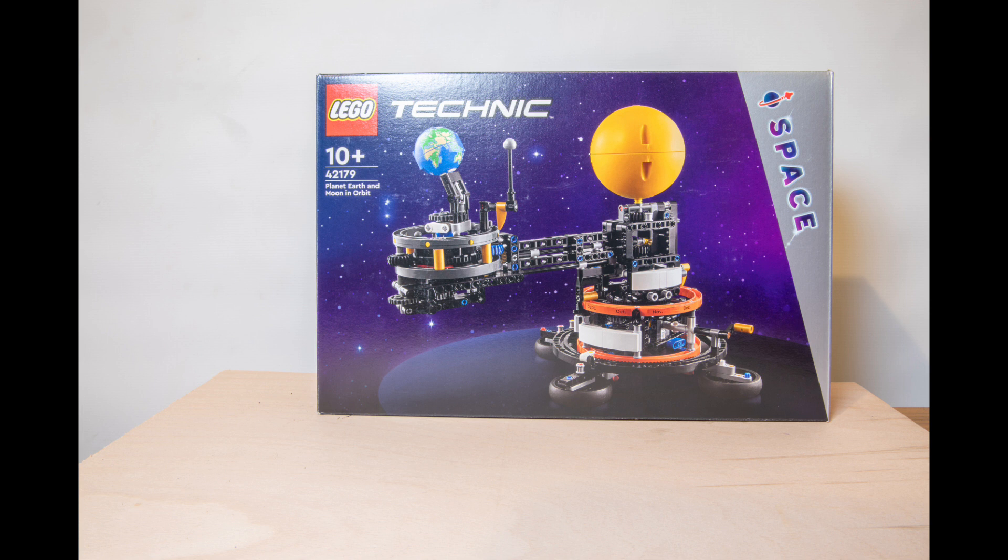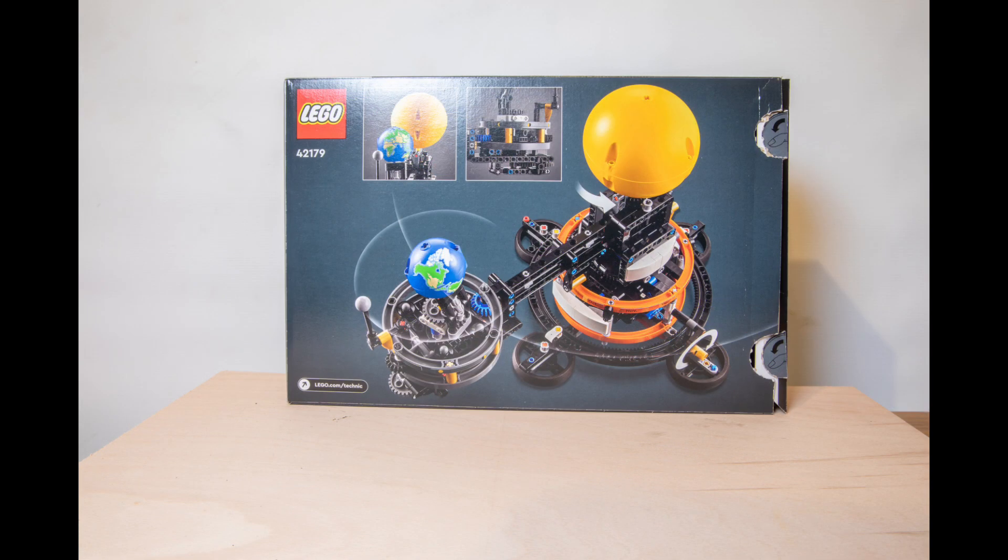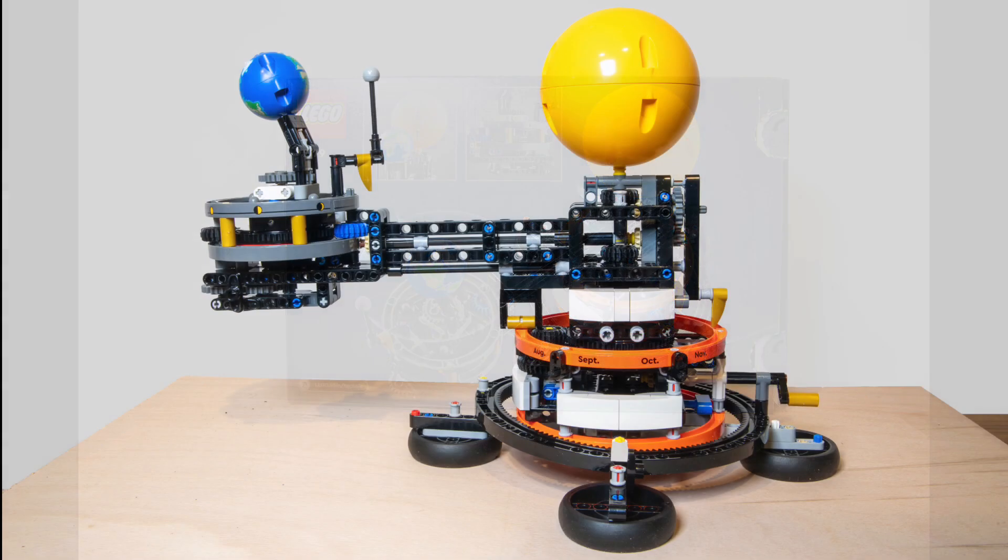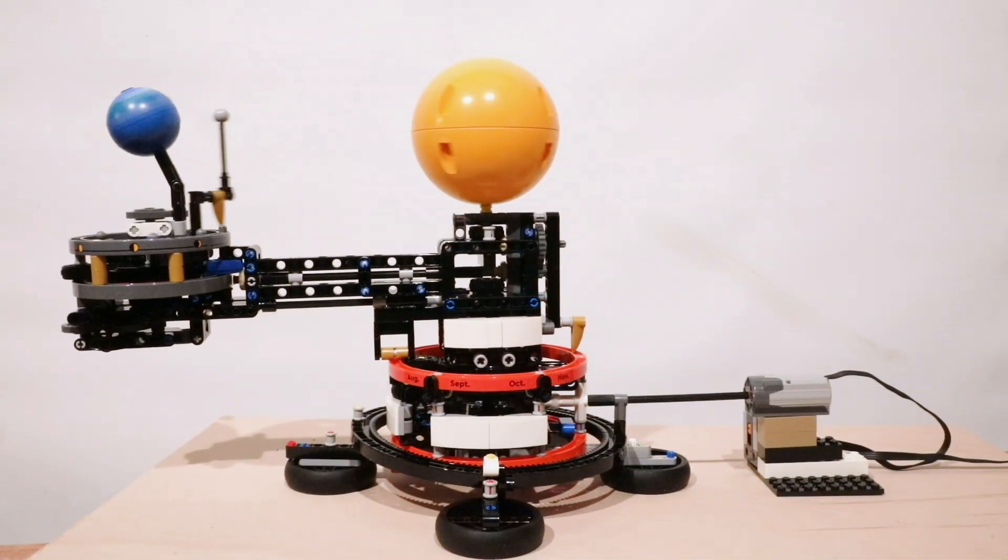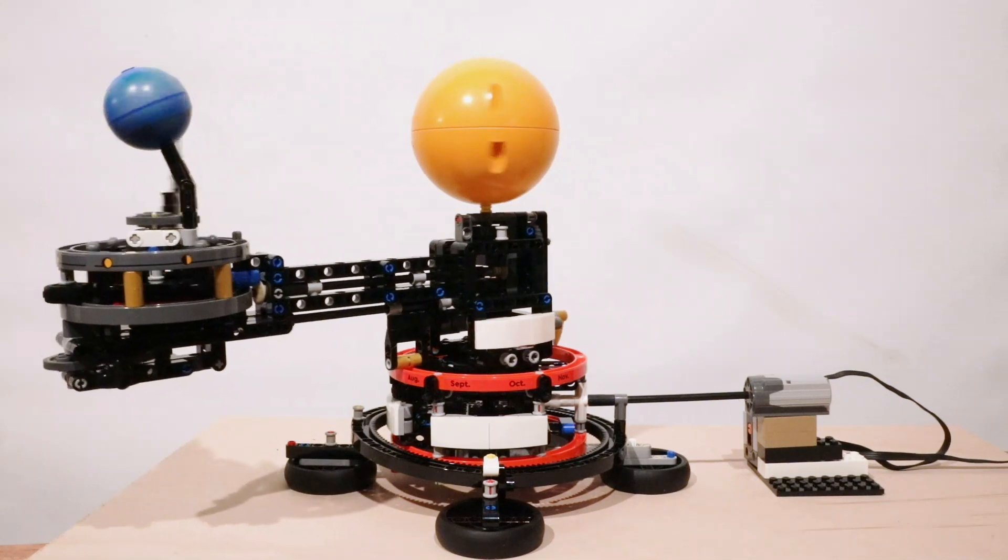The planet earth and moon in orbit is an interesting technique set. It is a build with many gears and is a good recreation of the earth and moon in orbit around the sun.